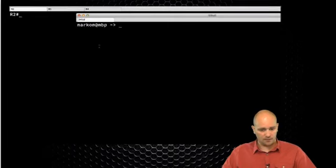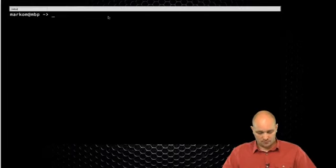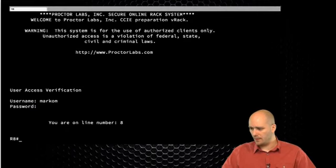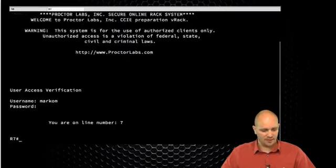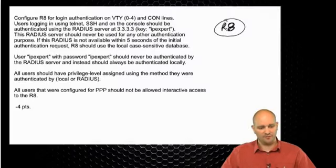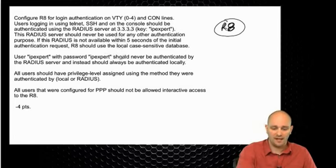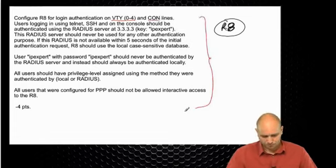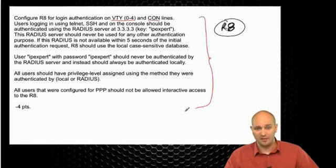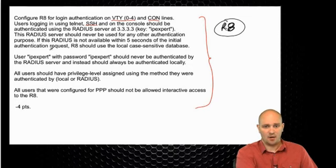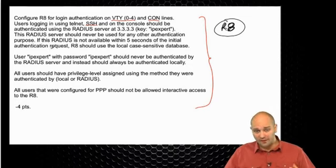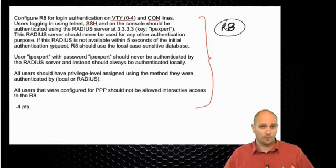I'm going to connect to R8 and I'm also going to be needing R7 so let me bring it back in. The first thing to recognize is what actually needs to be done. There is an important clue: this is applying for both VTY and console lines, so everything needs to apply to all of these lines — on the console and when someone is remotely accessing this. Another important clue is SSH, which tells me implicitly that I actually have to configure and enable SSH on this box.